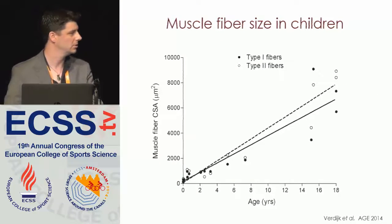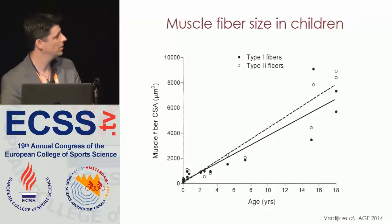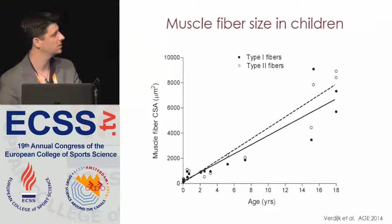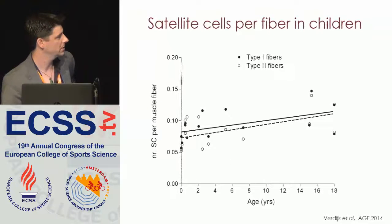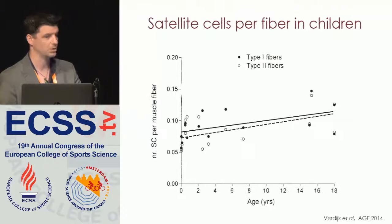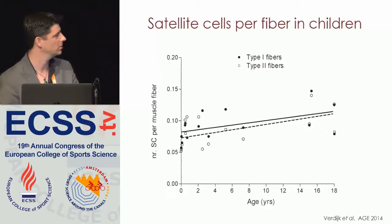If you look at the young children, anywhere between 0 and 18 years of age, with aging you obviously have growth — normal childhood growth — with an increase in muscle fiber size. In black you see the type 1 fibers, in white the type 2 fibers, and for both there's an almost linear increase in fiber size with childhood growth. Apart from that being associated with an increase in nuclear content, there's not that much happening if you look at satellite cells — around 7 satellite cells per 100 fibers in type 1 and type 2 when you're born, and that doesn't increase much.